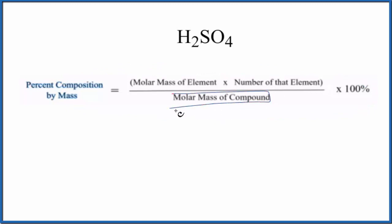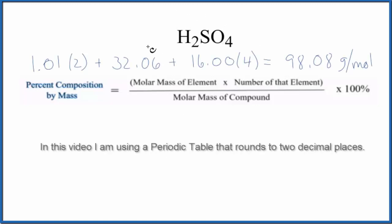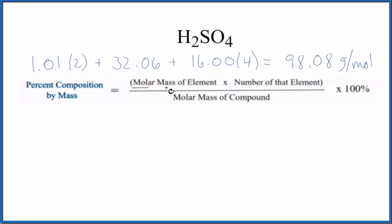The molar mass for the entire compound H2SO4 is 98.08 grams per mole. Now that we have the molar mass, we can work with each element.